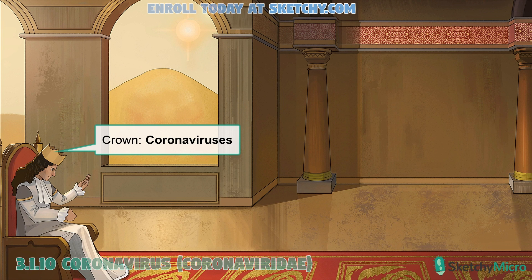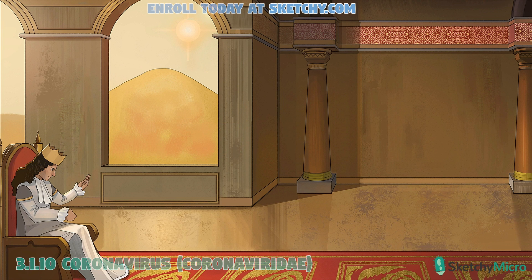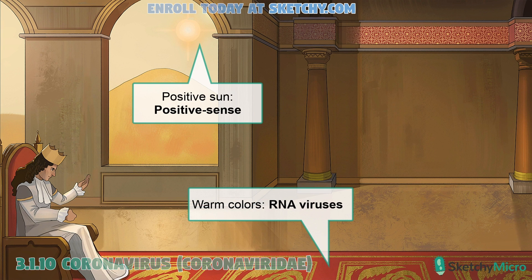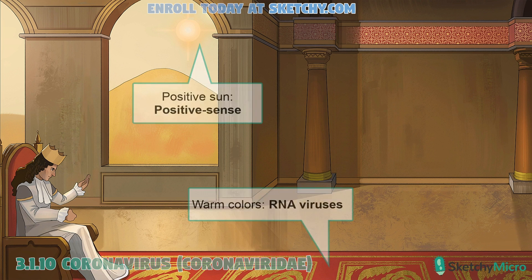First, some basic specs. Coronaviruses are single-stranded positive sense RNA viruses. We've set the scene in warm orangey hues, which should tip you off that we're talking about an RNA virus. And rising above the horizon, you'll see a positive sense sun. The positive sense part means that the genome can also serve as messenger RNA. We'll come back to the implications of this in our discussion of the life cycle.